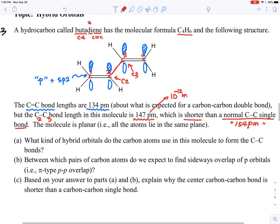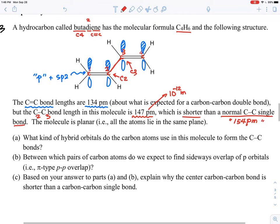Let's try to answer this question one by one. What kind of hybrid orbital do all the carbons use in this molecule? All of them are sp2 hybrid. C1, C2, C3, C4, all of them.